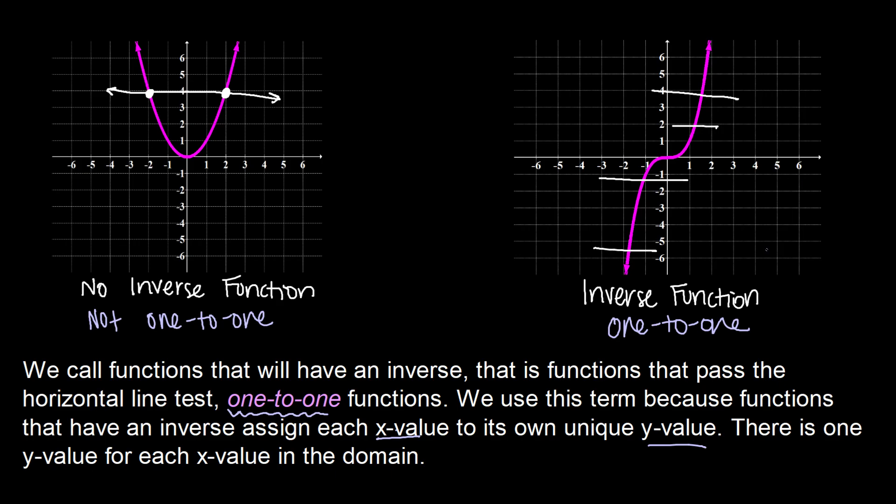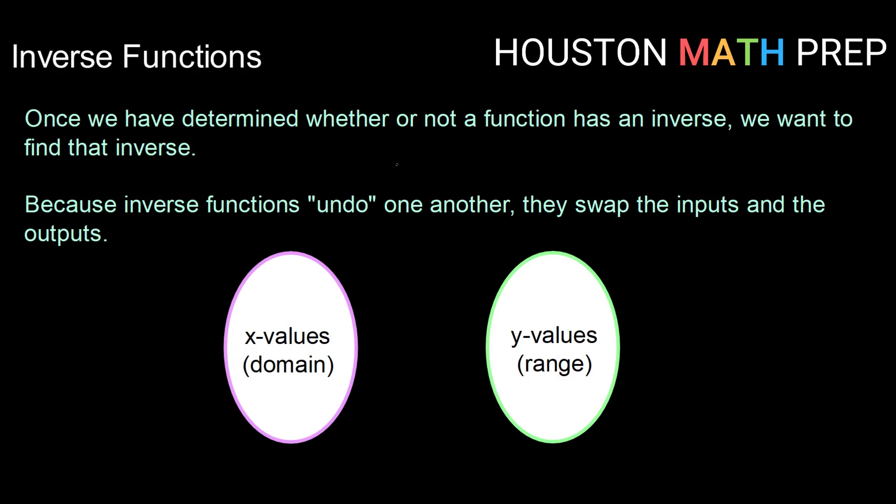So once we've determined whether or not a function is one-to-one, that is whether or not it has an inverse, how then would we find that inverse? So because we know that inverse functions undo one another, then we would want to swap the inputs and the outputs.